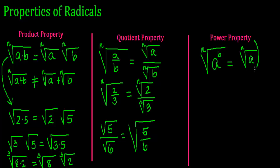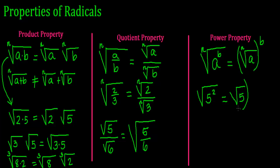So this is equivalent to having the nth root of a, everything raised to the b power. For example, if I have the square root of 5 squared, this is equivalent to having the square root of 5, squared.